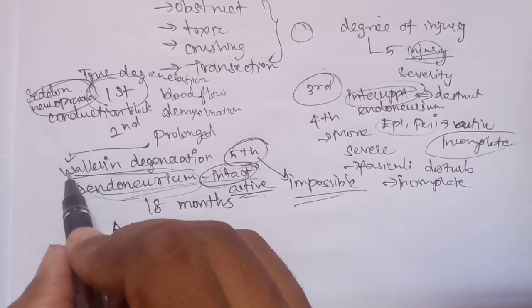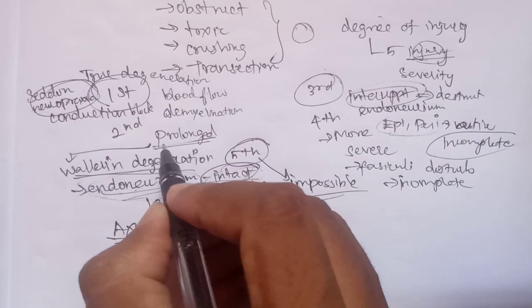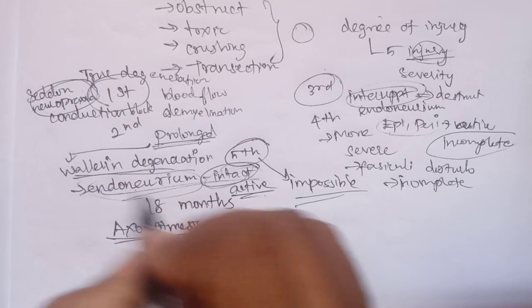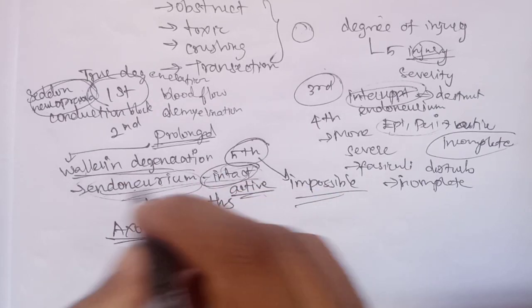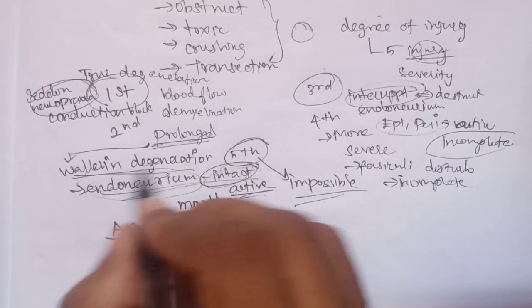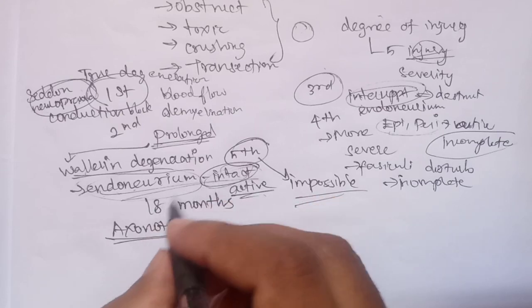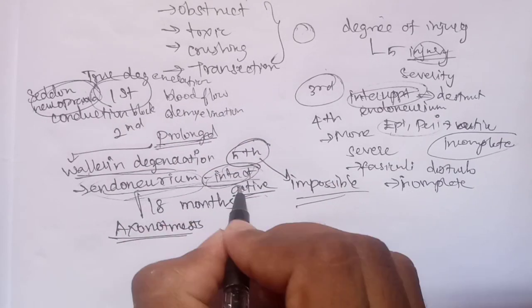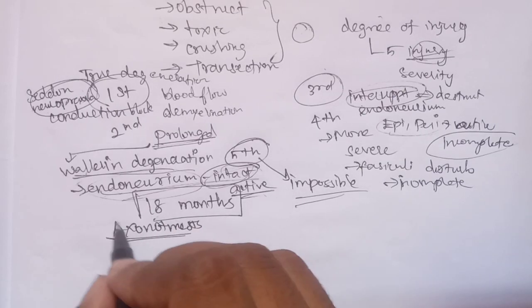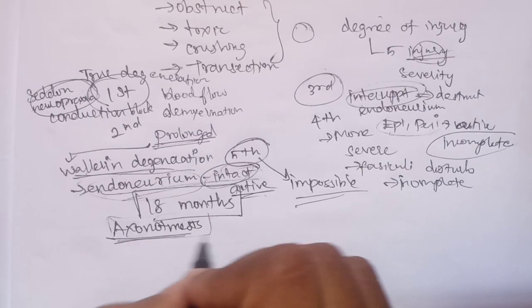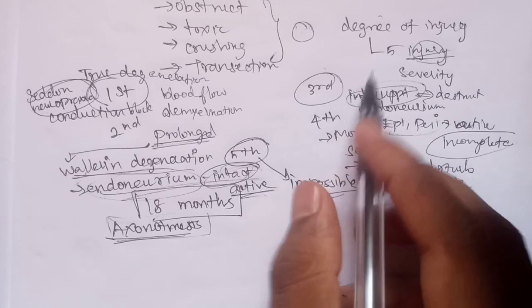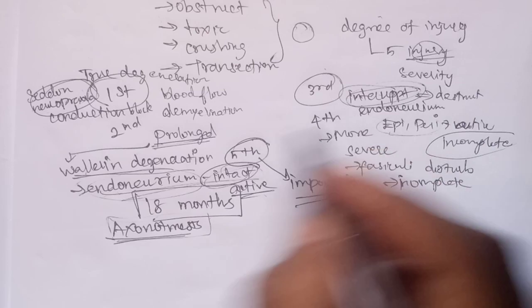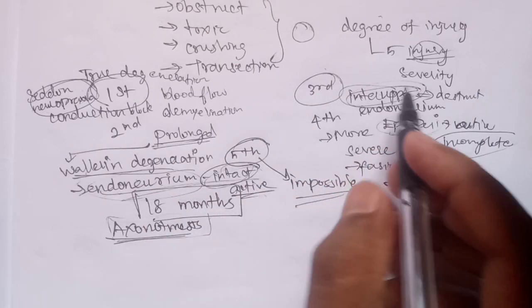The second degree is caused by prolonged pressure. The second degree involves axon degeneration — the axon is disrupted and undergoes active Wallerian degeneration.